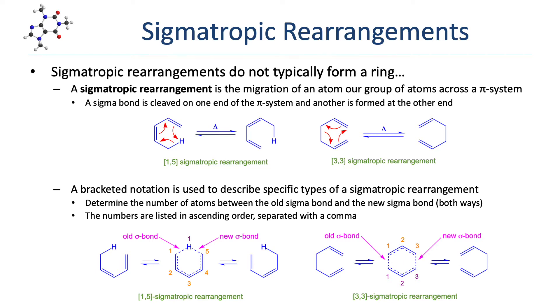A sigmatropic rearrangement is the migration of an atom or group across a pi system. In the reaction, a sigma bond is cleaved on one end of the pi system and another is formed at the other end.